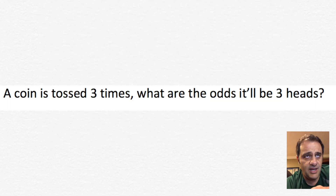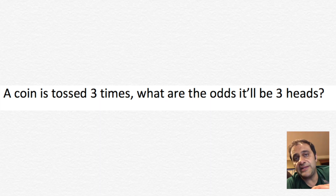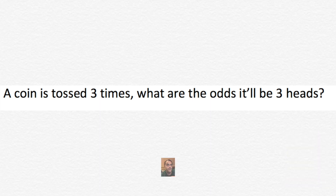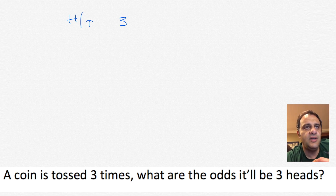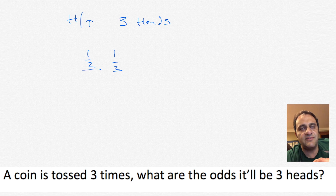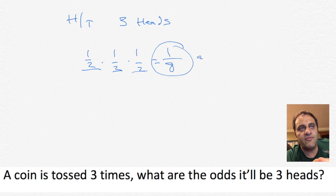Let's try this one. A coin is tossed three times — what are the odds it'll be three heads, meaning three heads in a row? Every time a coin is tossed, we have two possibilities: heads and tails. The odds of heads coming up first is one-half, the second is one-half, and the third is one-half. To calculate all three heads, it is one-half times one-half times one-half, for an answer of one-eighth.